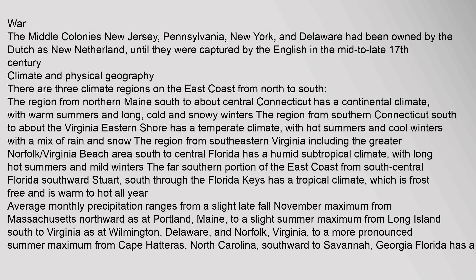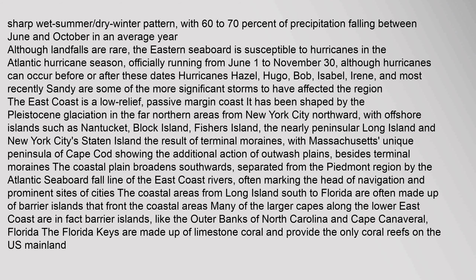The far southern portion of the east coast, from south-central Florida southward through the Florida Keys, has a tropical climate, which is frost-free and warm to hot all year. Average monthly precipitation ranges from a slight late-fall maximum from Massachusetts northward, to a slight summer maximum from Long Island south to Virginia, to a more pronounced summer maximum from Cape Hatteras, North Carolina, southward to Savannah, Georgia. Florida has a sharp wet summer, dry winter pattern, with 60 to 70 percent of precipitation falling between June and October. Although landfalls are rare, the eastern seaboard is susceptible to hurricanes in the Atlantic hurricane season, officially running from June 1 to November 30.